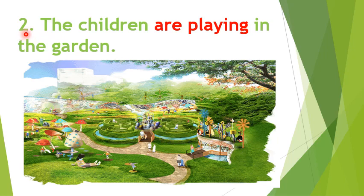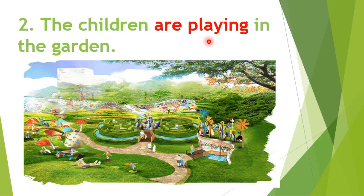Number 2: The children are playing in the garden. In this sentence, the subject is 'the children' and the subject is plural, so we have used the helping verb 'are'. 'Playing' is the main verb and 'garden' is the object. 'Are playing' indicates the sentence belongs to present continuous tense.